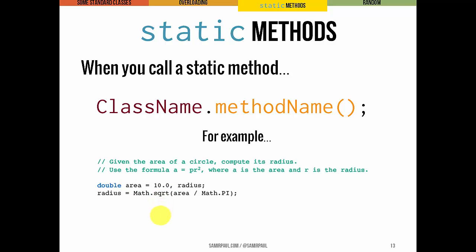Here, because of the way these methods are defined, we're able to use just the class name of Math itself. So Math.sqrt of area divided by Math.PI.